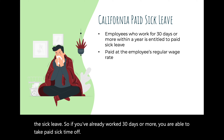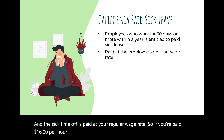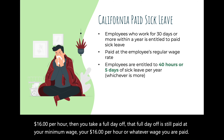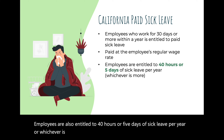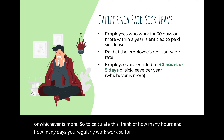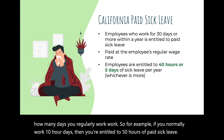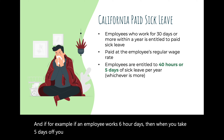Sick time off is paid at your regular wage rate, so if you're paid $16 per hour and take a full day off, that day is still paid at your regular wage. Employees are also entitled to 40 hours or five days of sick leave per year, whichever is more. For example, if you normally work 10-hour days, you're entitled to 50 hours of paid sick leave. If an employee works 6-hour days, five days equals only 30 hours, so they actually receive 40 hours.